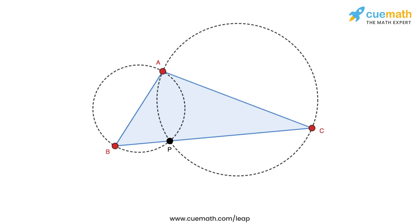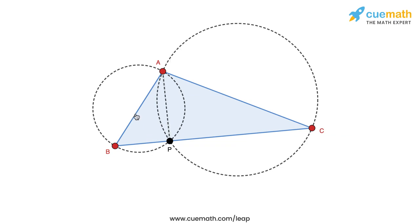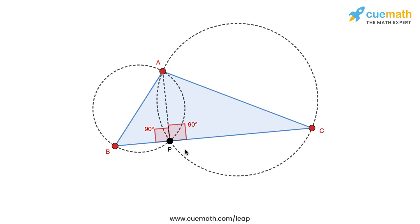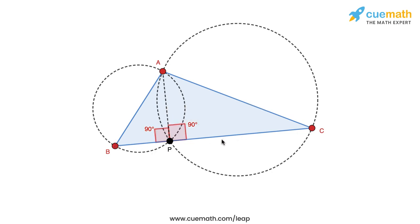Think about the segment AP. Now think about the angle that diameter AB subtends at point P — angle APB must be 90 degrees because it is an angle in a semicircle. Similarly, the angle that diameter AC subtends at point P — angle APC — is also 90 degrees because it is also an angle in a semicircle. This means angle BPC is 90 + 90, or 180 degrees, so it's a straight line and hence P must always lie on BC.